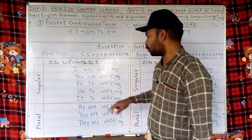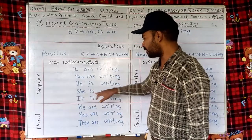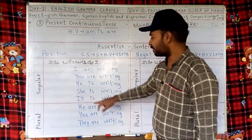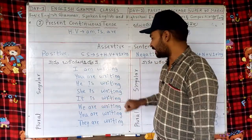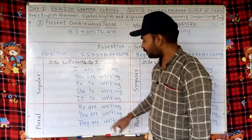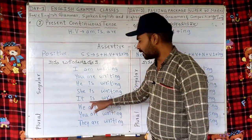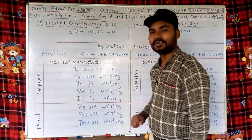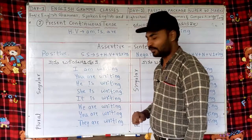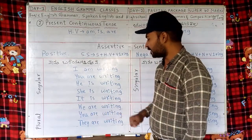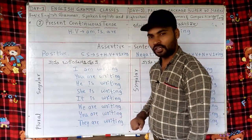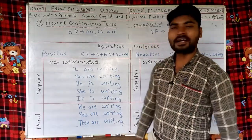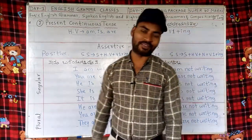He is writing — Avanu Baryuti Dene. She is writing — Avalu Baryuti Dene. It is writing — Adu Baryuti Dene. For plural: We are writing — Naamu Baryuti Dene. You are writing — Neevu Baryuti Dene. They are writing — Avaru Baryuti Dene.